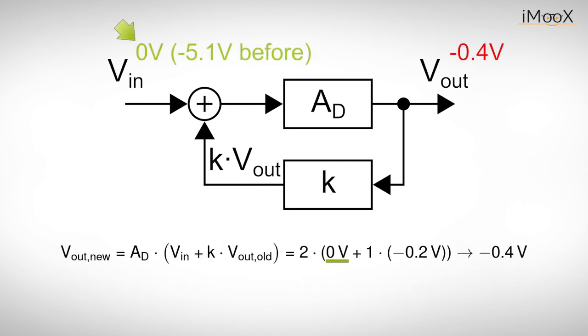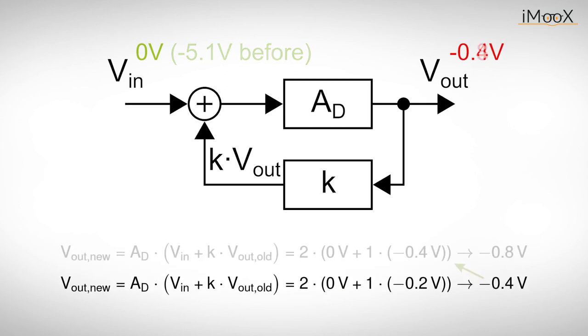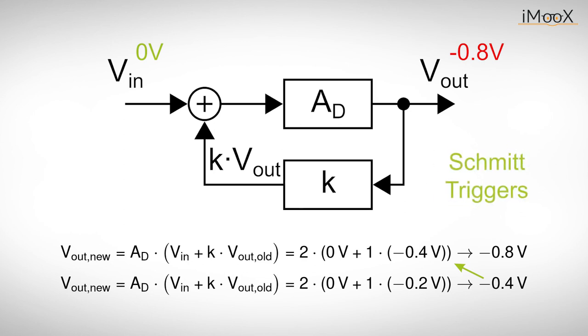We do not even have to apply this input voltage all the time. Just a very short amount of time is sufficient. This configuration is able to detect short changes of the input voltage beyond a certain limit. It behaves like the trigger of an oscilloscope, which we explained in one of our other videos. Hence these circuits are called Schmitt triggers, honoring their inventor.